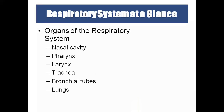The respiratory system is also called the respiratory tract — a continuous tract starting from the external nostrils to the lungs. The organs include: nostrils, nasal cavity, pharynx, larynx, trachea, bronchial tubes, and lungs.